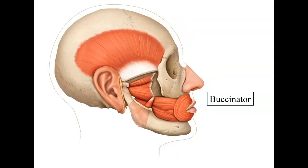If we remove some of the muscles, we can get to a deeper muscle called the buccinator. The buccinator's root word, buc or buck, means cheek. It is used in different kinds of mouth behaviors like whistling, blowing, and sucking. That's the buccinator.